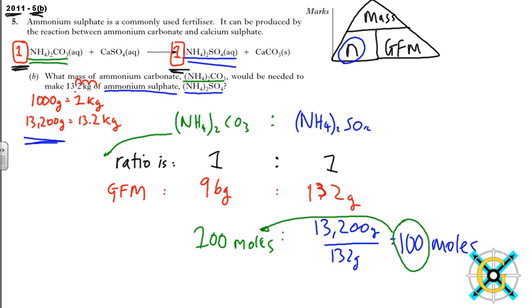So as we know the ratio is one to one if we have 100 moles of the product we're going to have 100 moles of reactant so 100 moles on this side means 100 moles on this side. So what we need to do now is use the gram formula mass or gram formula mass here of the